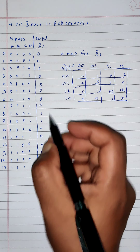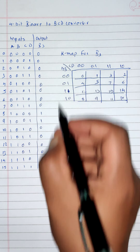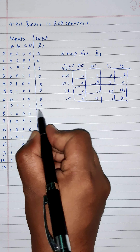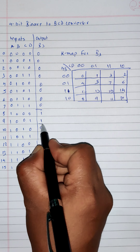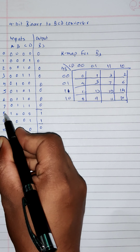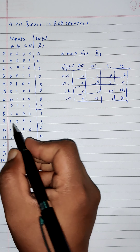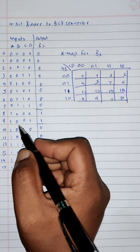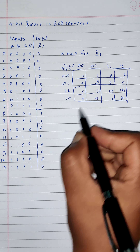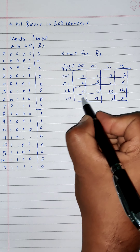Now our output B3 is 1 at only these 2 places, at 8 and 9. So at 8 and 9 we will write 1, and this is the only group possible out of this Kmap.